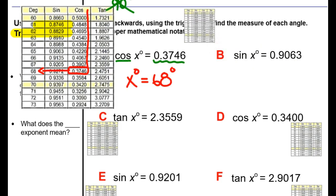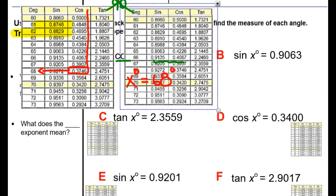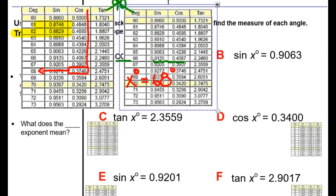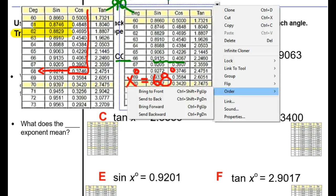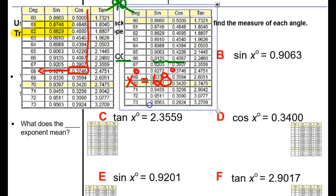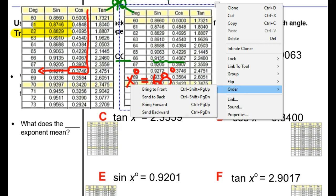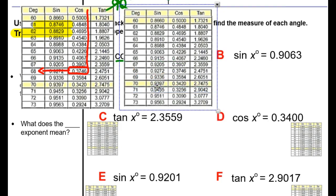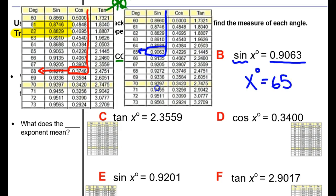For the next one, I'm going to just make my chart bigger here so that you can see what we're doing. For this problem, we're looking for 0.9063 in the sine column. So in the sine column, we look down until we find 0.9063, and we read over to the side and we find out that that angle is 65 degrees.